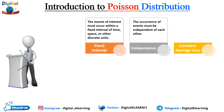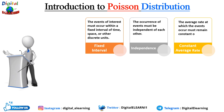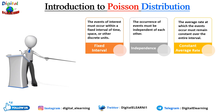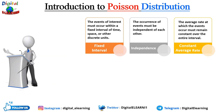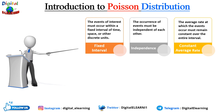Third, constant average rate: the average rate at which events occur must remain constant over the entire period of time. This means that the probability of an event happening in a given sub-interval should be proportional to the length of that sub-interval. For example, if the average rate is three accidents per day, it should remain constant throughout the day.